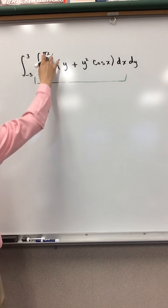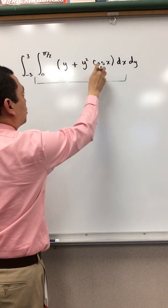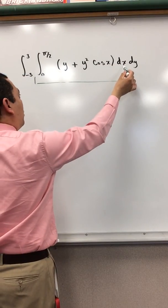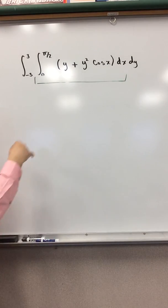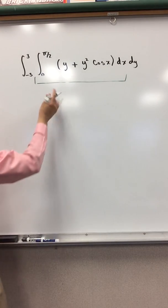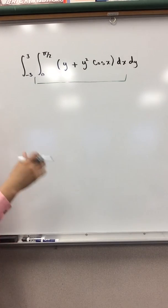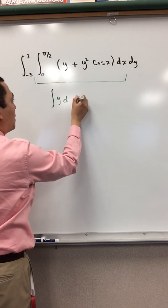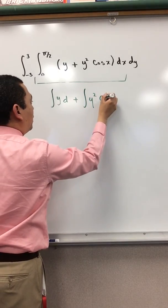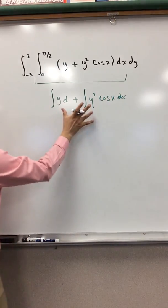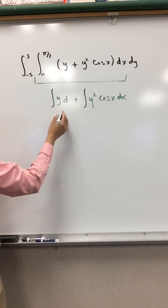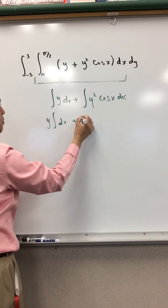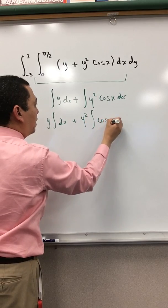We have the integral from 0 to π/2 of (y + y² cos x) dx dy. This is a double integral with two variables. That means we are going to solve first with respect to x, then with respect to y. We are going to treat the y variables as constants. So we split it as: integral of y dx plus integral of y² cos x dx. These two y's are going to be my constants.